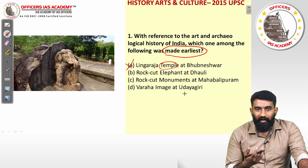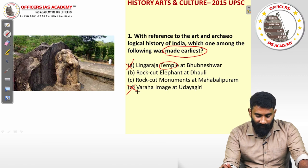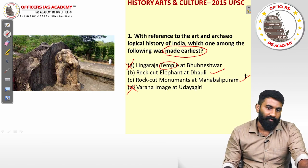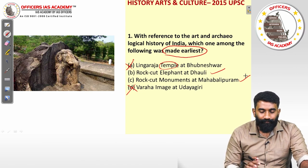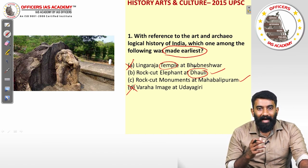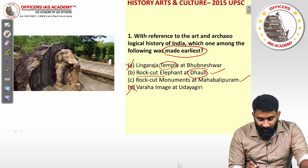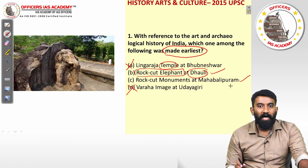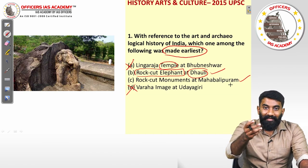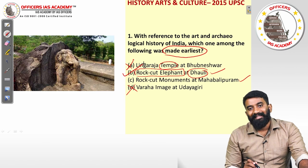The Varaha image is a Hindu god associated with a temple, so that is also not the answer. That leaves rock cut elephant at Dhauli and rock cut monuments at Mahabalipuram. Dhauli is in Kalinga, modern-day Odisha, where Ashoka created monuments including a rock cut elephant. The Mahabalipuram monuments were created during the Pallava period, more than 700 years later. So the answer is option B — rock cut elephant at Dhauli.